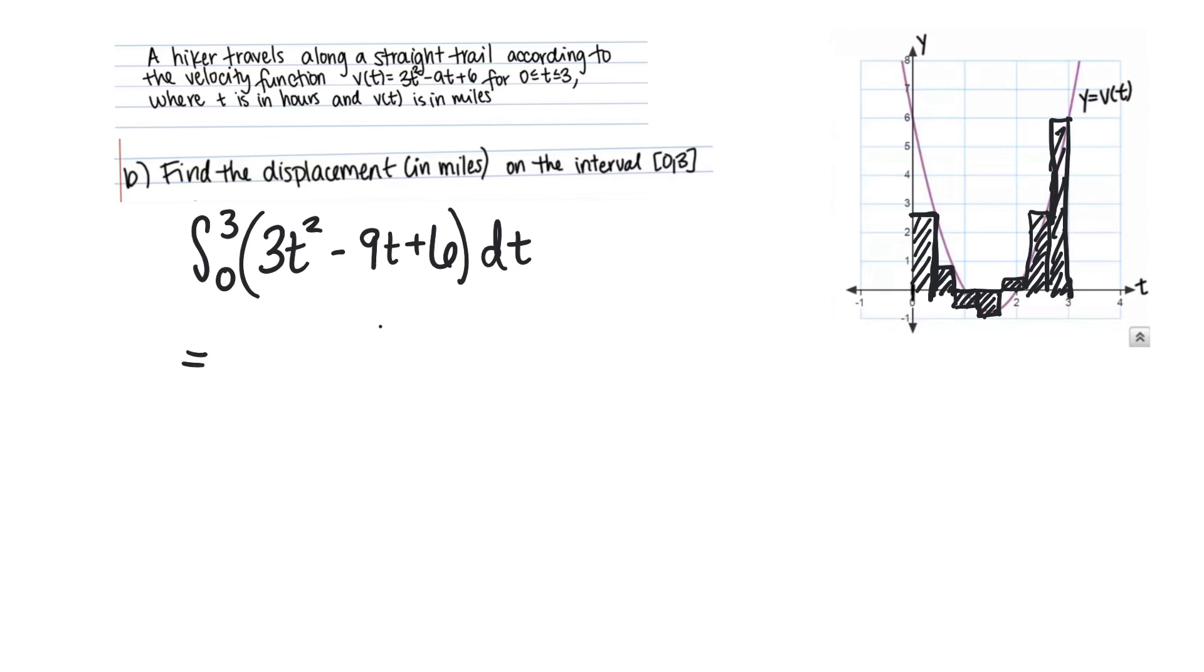So we're going to set this up as a Riemann sum, limit as n goes to infinity of the sum i goes from 1 to n of f of a plus i delta x times delta x.